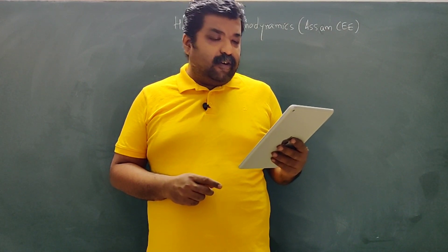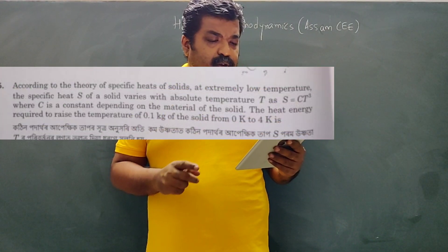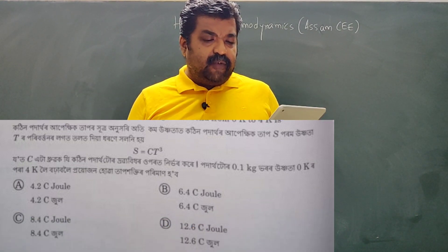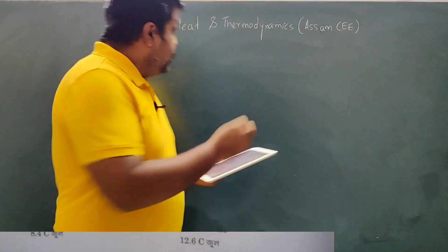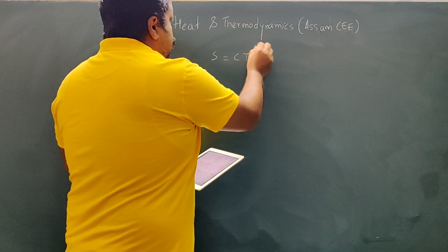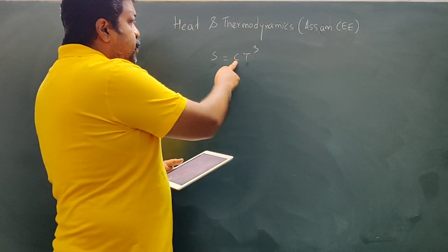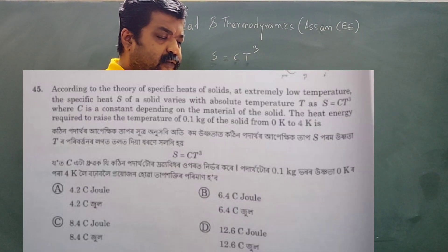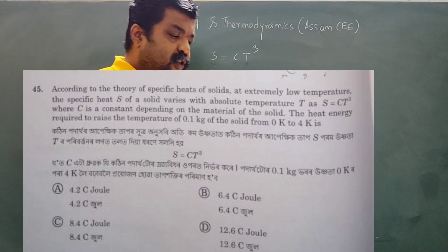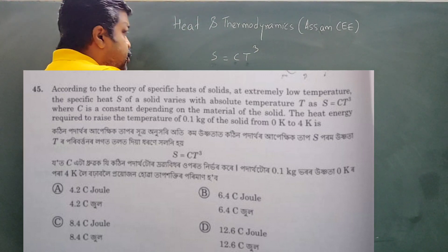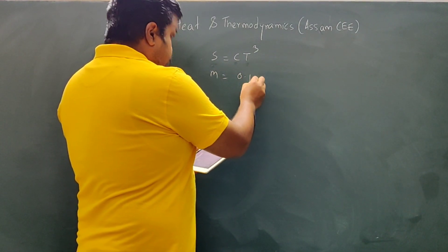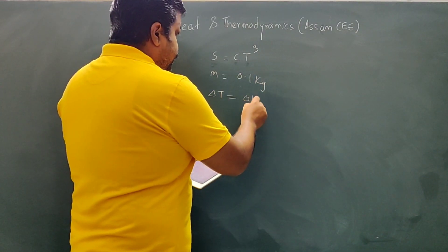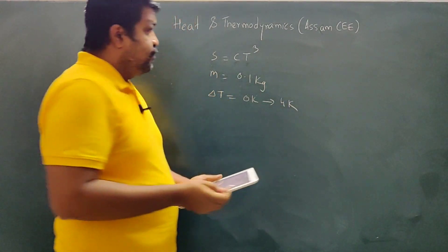The first question is Assam SEED 2019. According to the theory of specific heat of solids at extremely low temperature, the specific heat of a solid varies with absolute temperature T. The heat energy required to raise the temperature of 0.1 kg of solid from 0 kelvin to 4 kelvin. The mass is 0.1 kg and the temperature change is 0 K to 4 K.